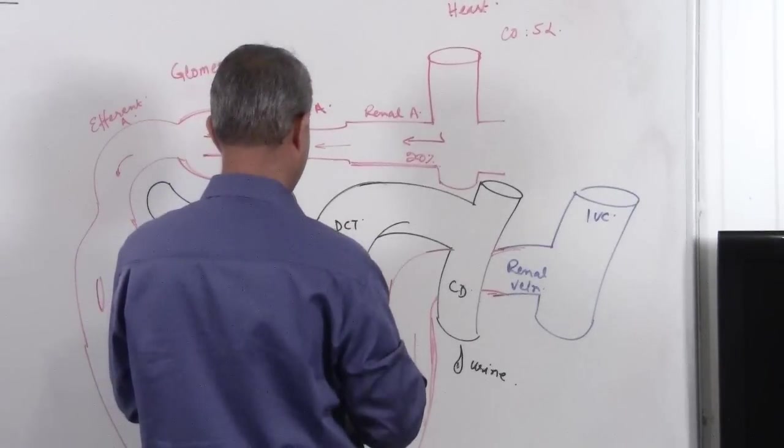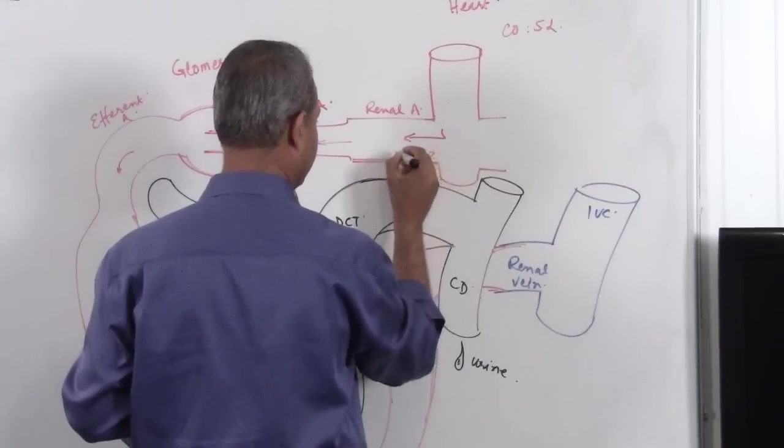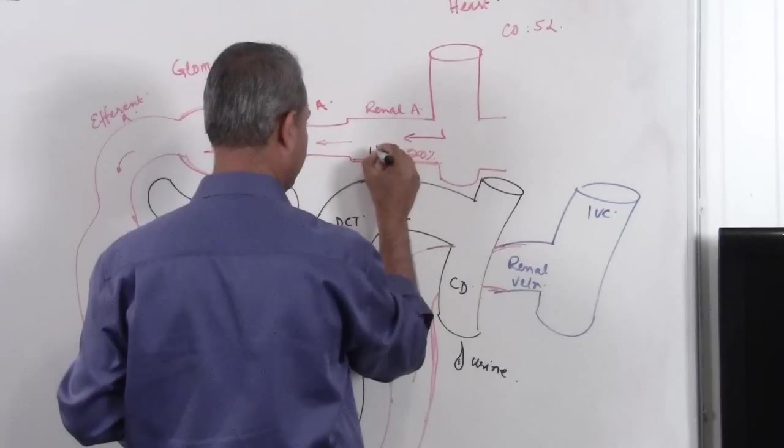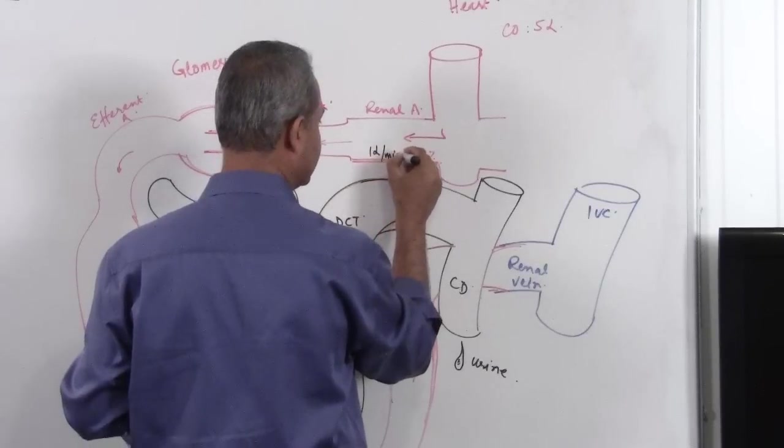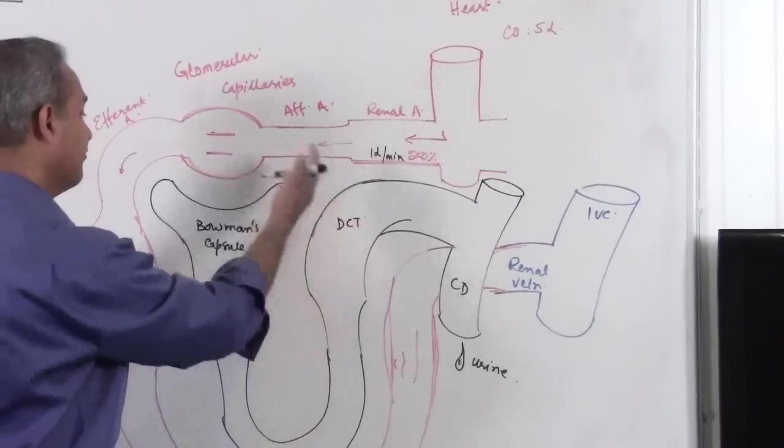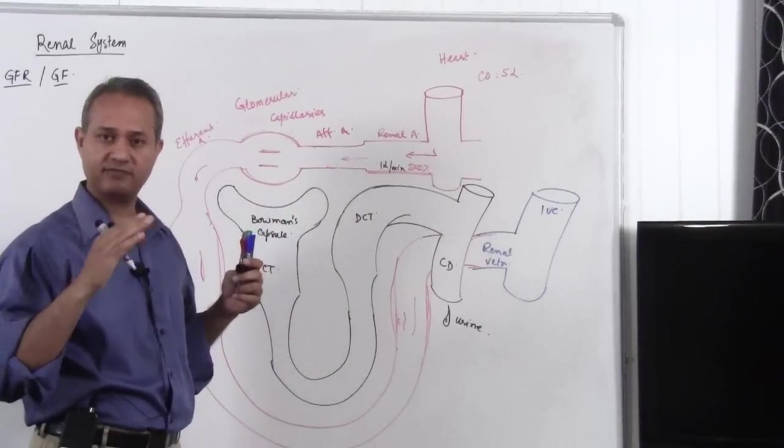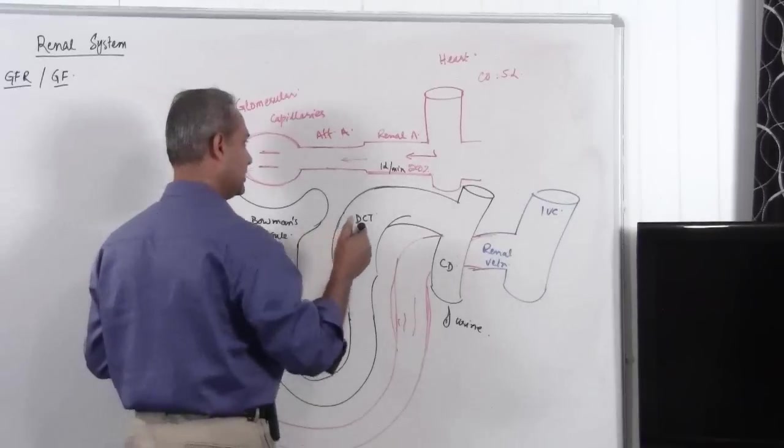So 20% of the 5 liter is going to be about 1 liter. So 1 liter of the blood, 20% of blood flow goes to the kidney. So 1 liter per minute and this is for both kidneys. I have made 1 kidney over here or actually I just have made 1 functional unit of the kidney but this is for both the kidneys, 1 liter of blood going into the kidney.